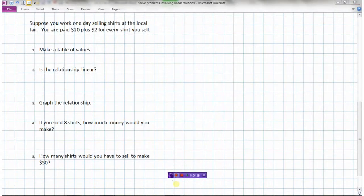Let's look at another example. Suppose you work one day selling shirts at the local fair. Let's say you are paid $20 plus $2 for every shirt that you sell. So we need to make a table of values. So what are our two variables that we're working with? The number of shirts we don't know, so let's call that N. So that's one of our variables, the number of shirts we sell. And then how much money we make. Let's go with M for money. So if you sold 0 shirts, let's start with 0 shirts. If we sold 0 shirts, we're still going to make the $20. Because it says you're paid $20 for the day plus $2 for every shirt that we sell. So if we sold 0 shirts, we're still going to make $20.